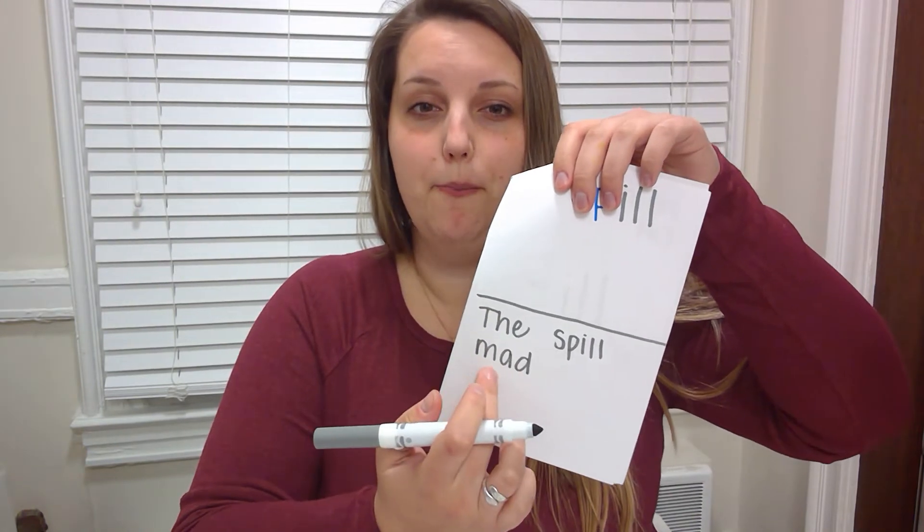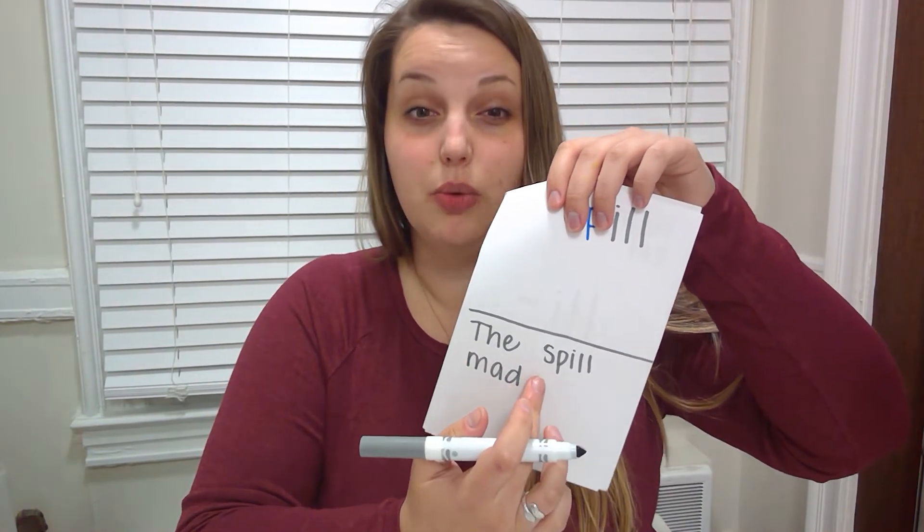Our next word is the word made — M-A-D-E. If we just had these three letters M-A-D, what word would that spell? Mad. That's right. We have to put an E at the end to make the A say its name. Made. So we have to have that silent E.